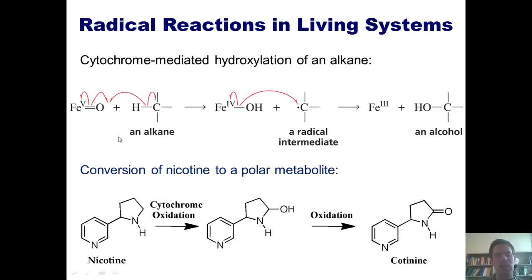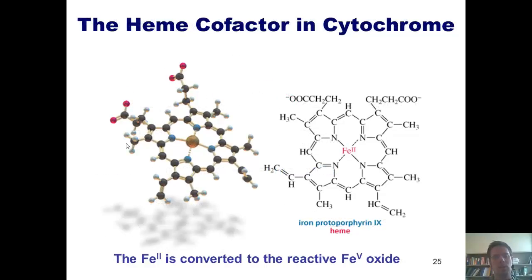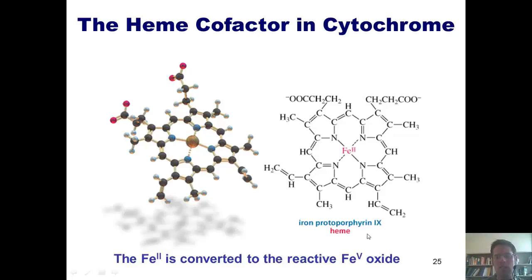All of these cytochrome enzymes involve the element iron in their active sites, so yes, we do need to make sure we consume iron. Here's a computer model of the heme cofactor — the iron active site inside the cytochrome enzymes. The iron atom is the gold atom in the center, flanked by four nitrogen atoms in a structure called a protoporphyrin. The iron(II) atom gets oxidized up to iron(V) oxide before it can act as a hydroxylating agent for polarizing nonpolar molecules that we've ingested or inhaled.